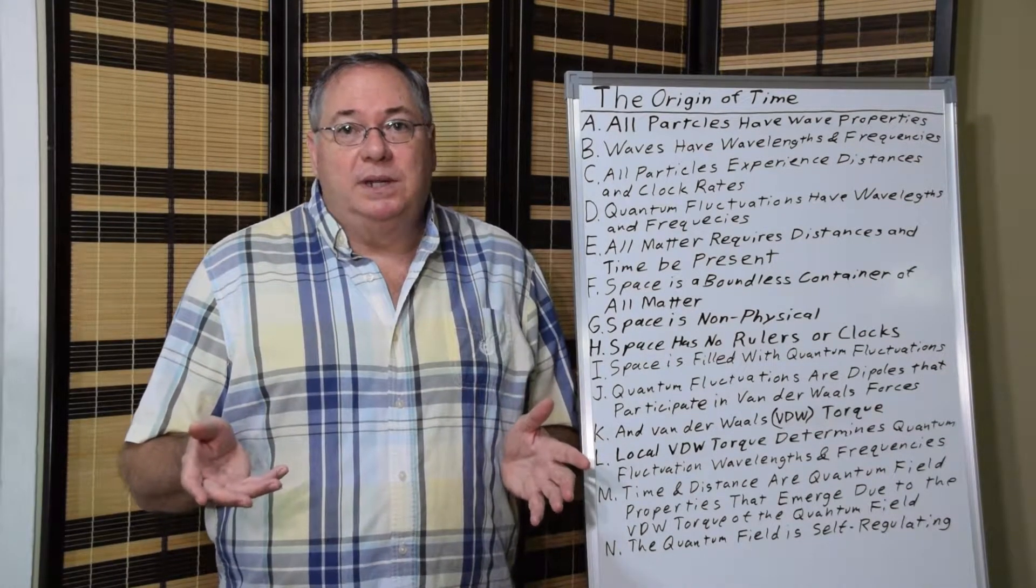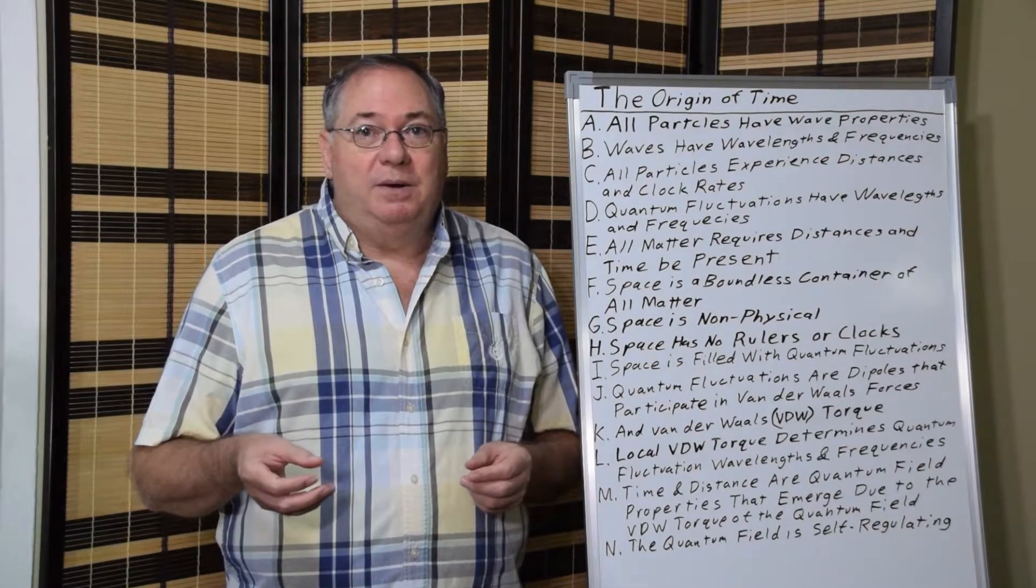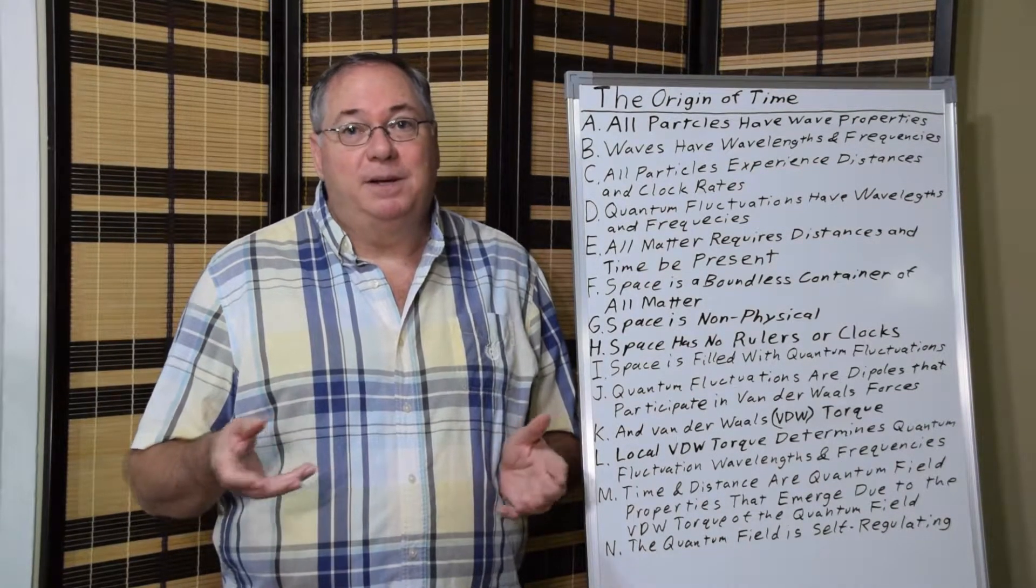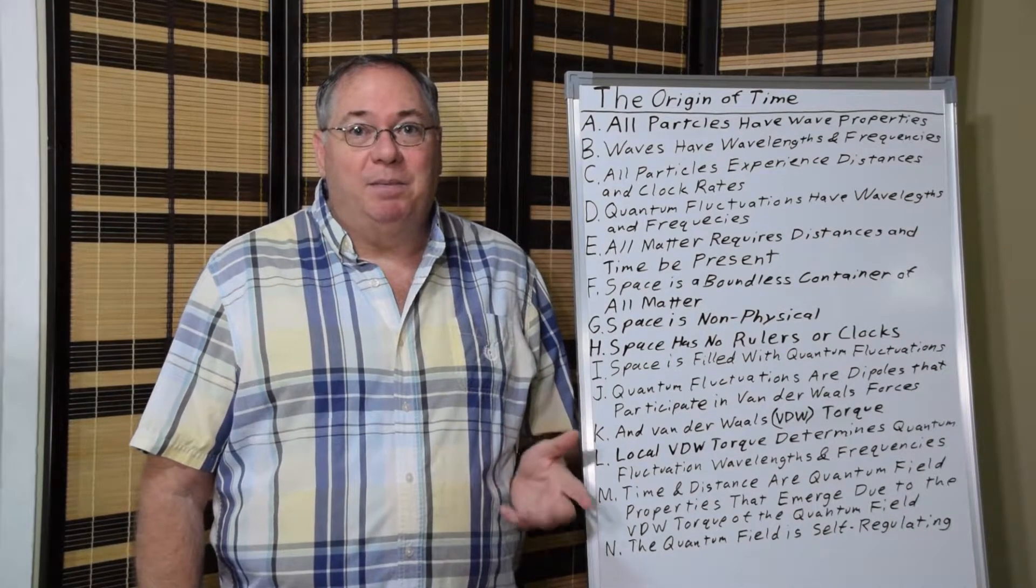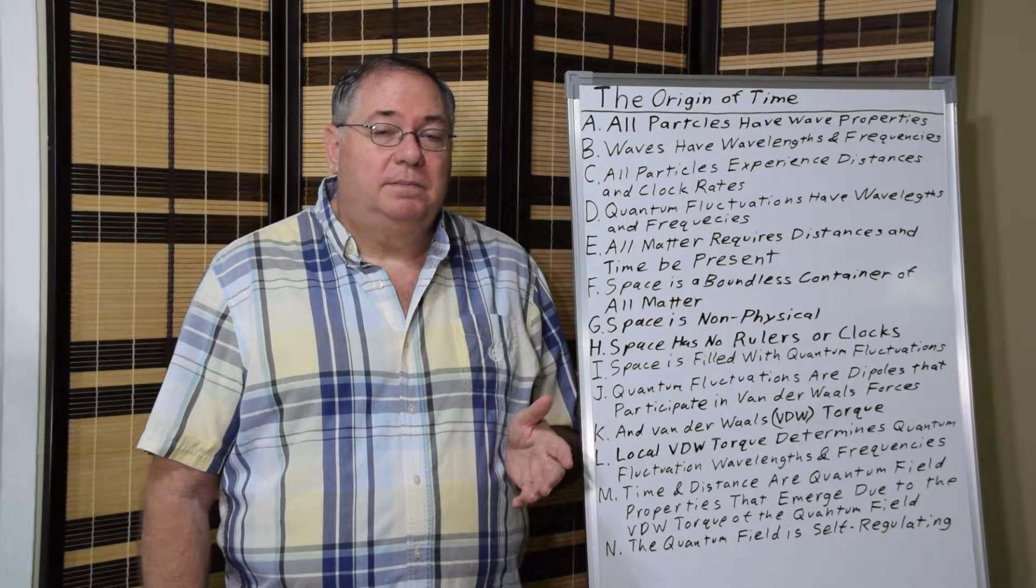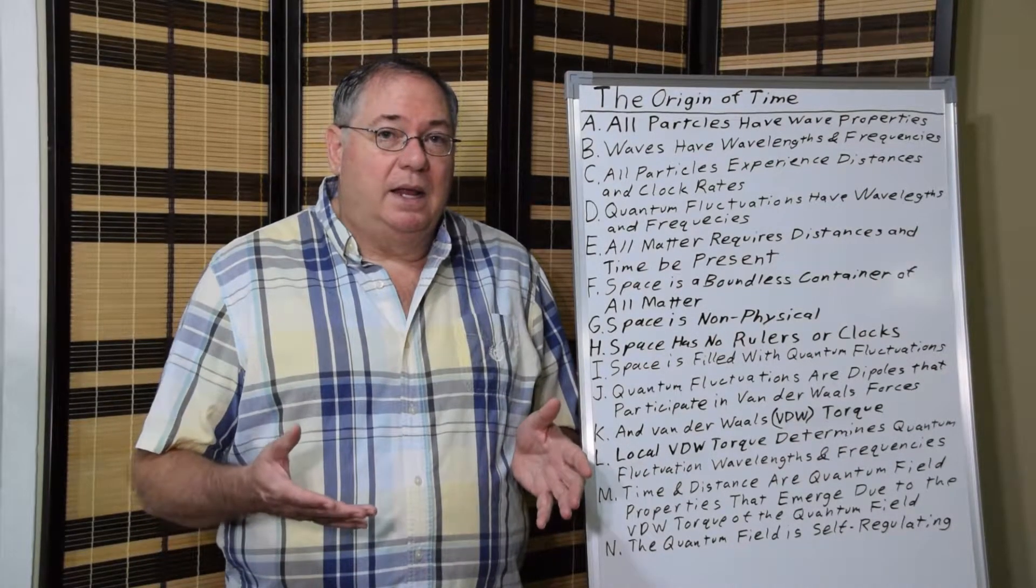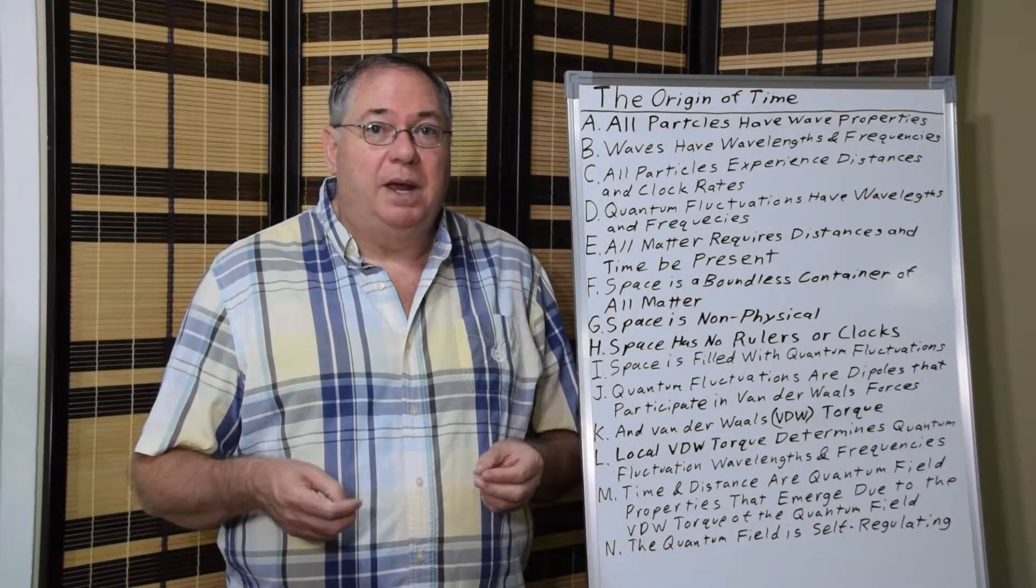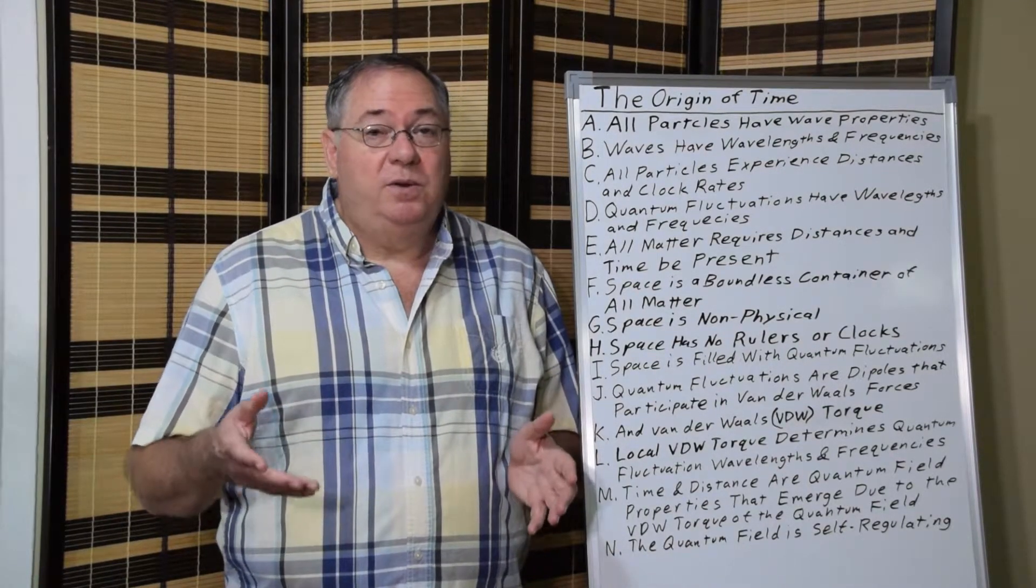So what's the problem? Why do people have problems figuring out where time is? And that's because of Einstein's lie that time emerges from space. Because space alone, the literary definition is it's a boundless container that contains all matter. Space alone is not physical.